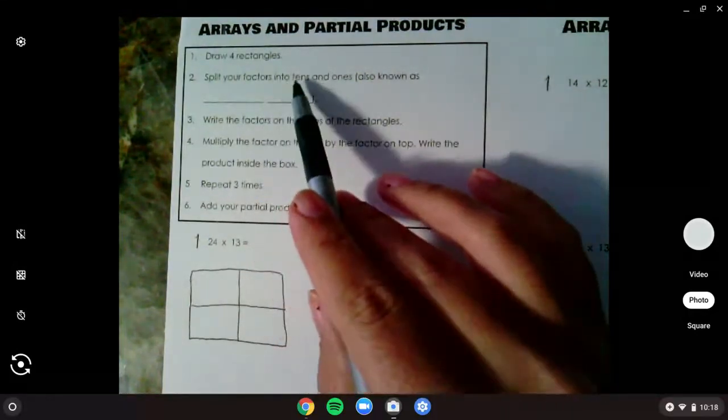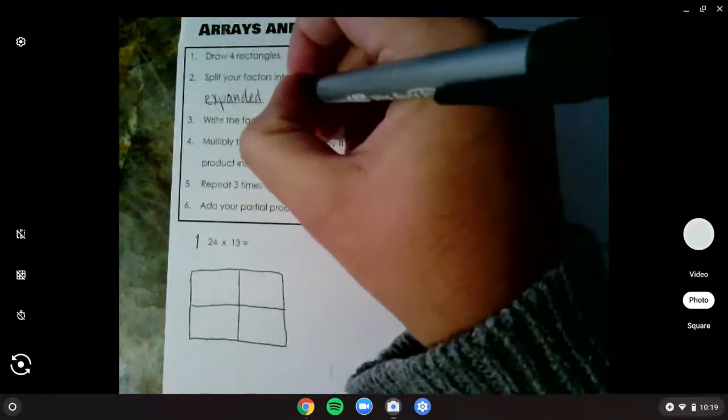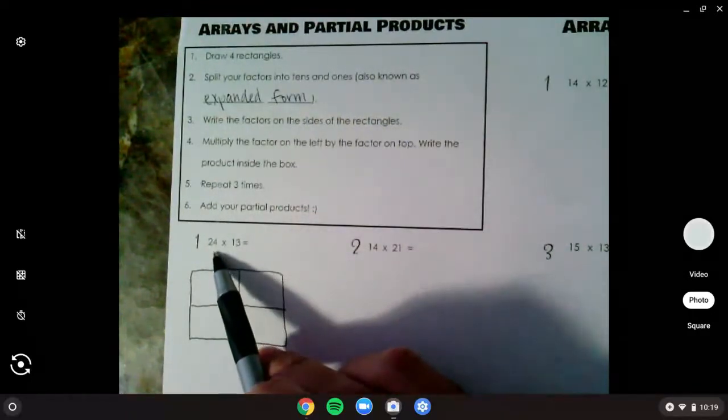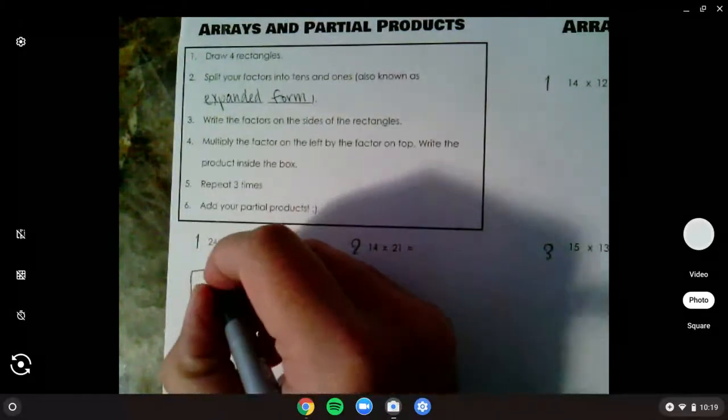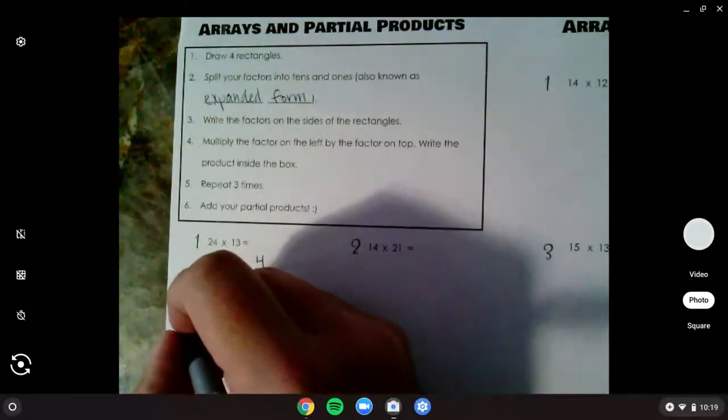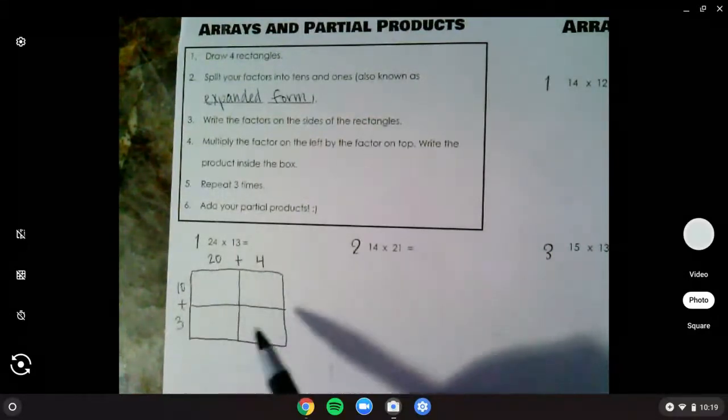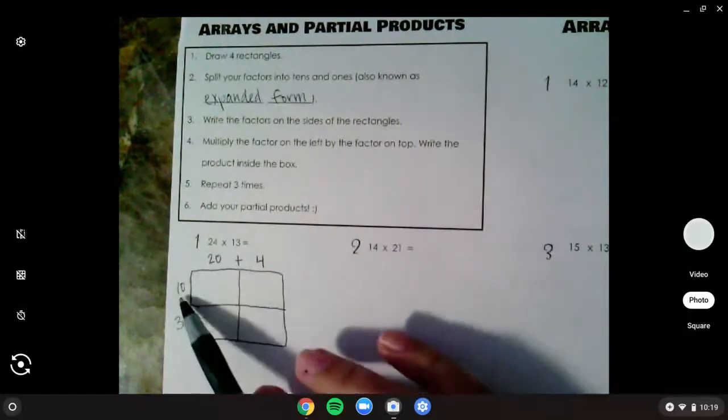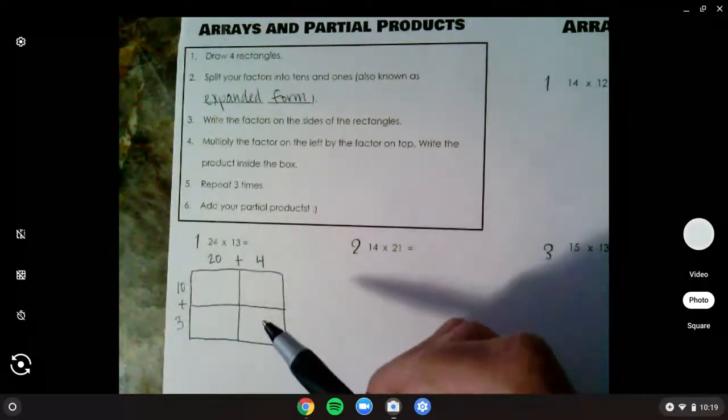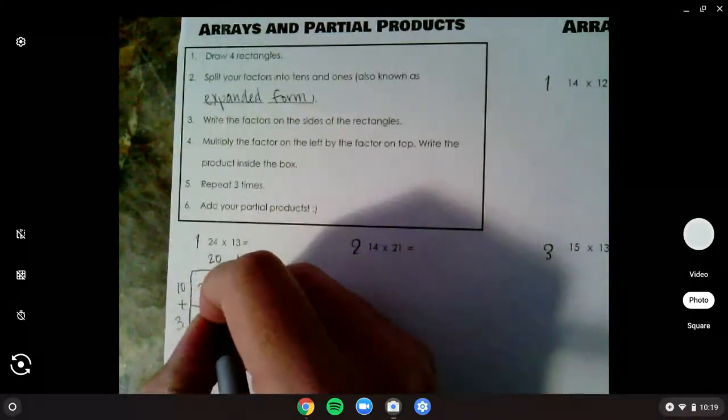I'm going to draw a rectangle, and I just like to split it like a window into four. Then I need to split my factors into tens and ones, also known as that expanded form. I'm going to write my factors on the sides of the rectangles. So I come down here and I look at 24 first. To break that into expanded form would be 20 plus 4. Then I do it with my 13. That would be 10 plus 3. I try and put my pluses on those lines to keep my numbers in the middle of the boxes. Now I'm going to multiply the factor on the left by the factor on top, and I write that inside. So I do 10 times 20. This is like that mini math facts. I can do this nice and fast because I see 2 times 1 is 2 and then two zeros.